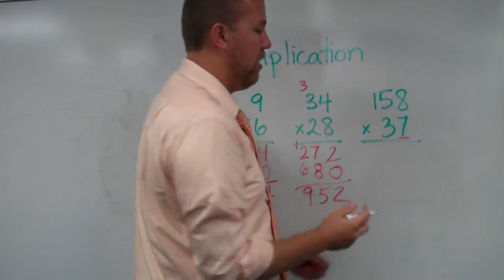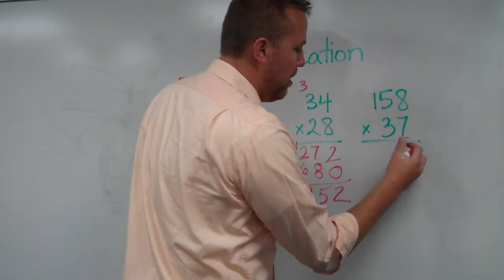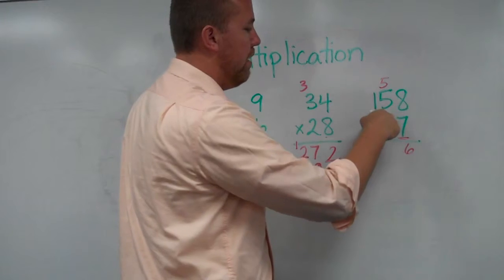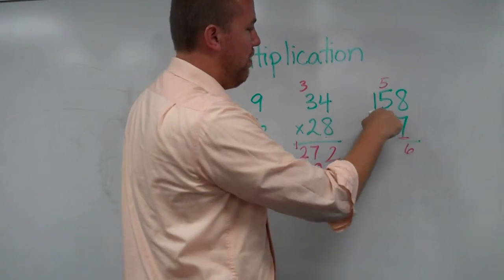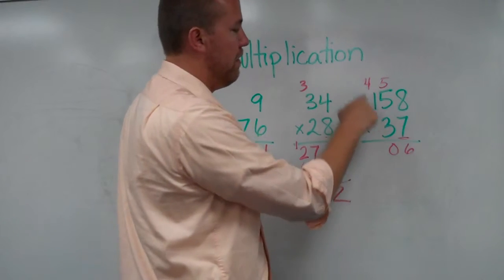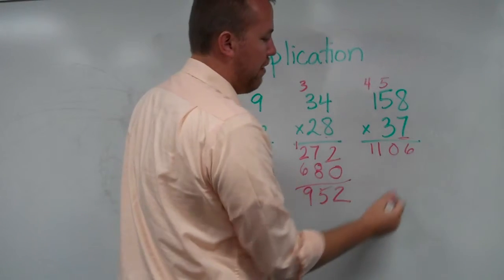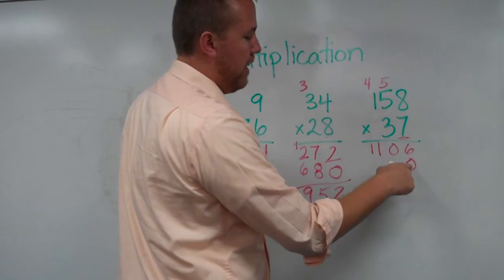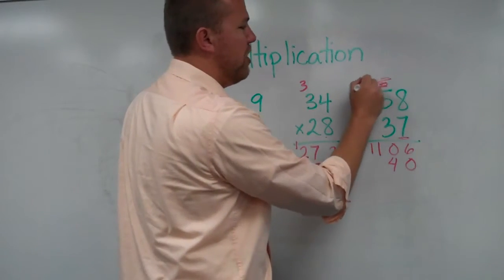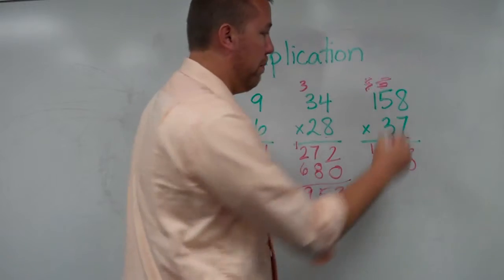7 times 8, because we always start right here. 7 times 8 is 56. Bring the 1s down. Carry the tens. 7 times 5, or 50, is 35. 5 plus 5 is 40. 7 times 1 is 7, plus 4 is 11. Bring that right there. Bring down the 0. 3 times 8 is 24. Make sure to just scribble those out so that you don't get mixed up there.